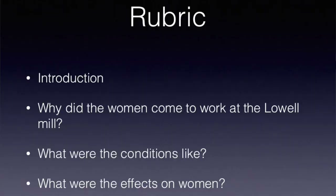Here's the rubric that we're looking at. When you write your answer to this question, provide an introduction. I'll probably give you an introduction in the assignment anyway. The next thing I want you to do is answer: why did the women come to work at the Lowell Mill? Then tell me what were the conditions like at the mill? And finally, what were the effects on women? We're going to go over all of that today.